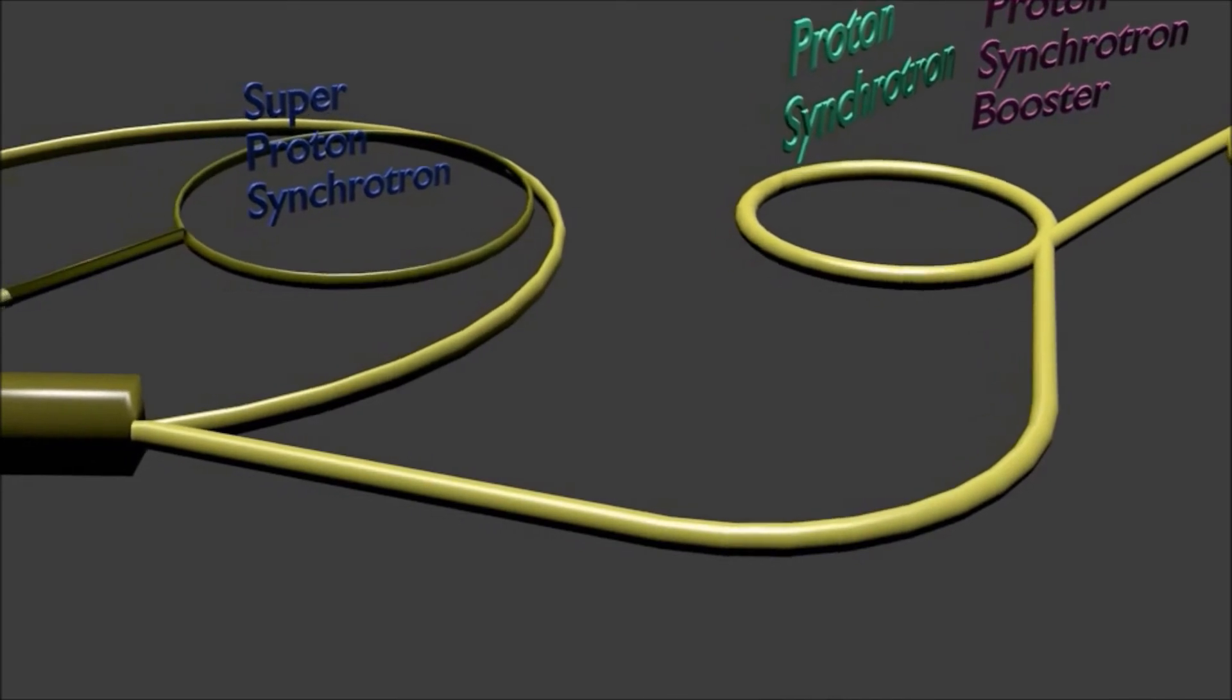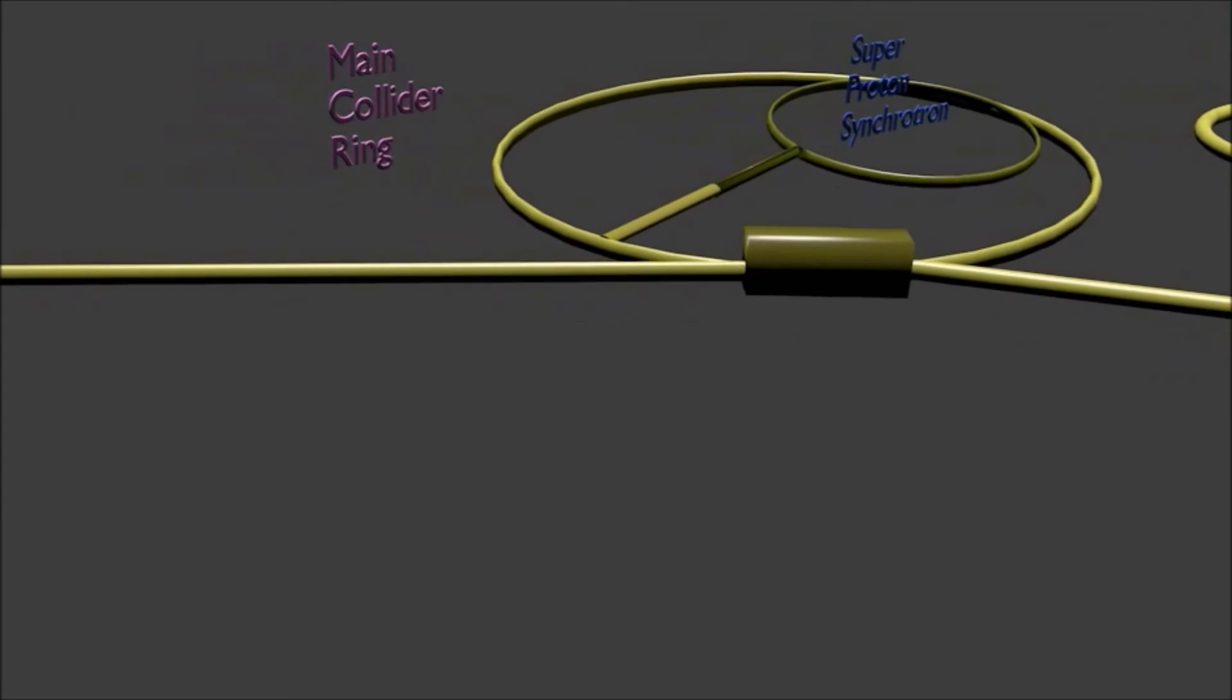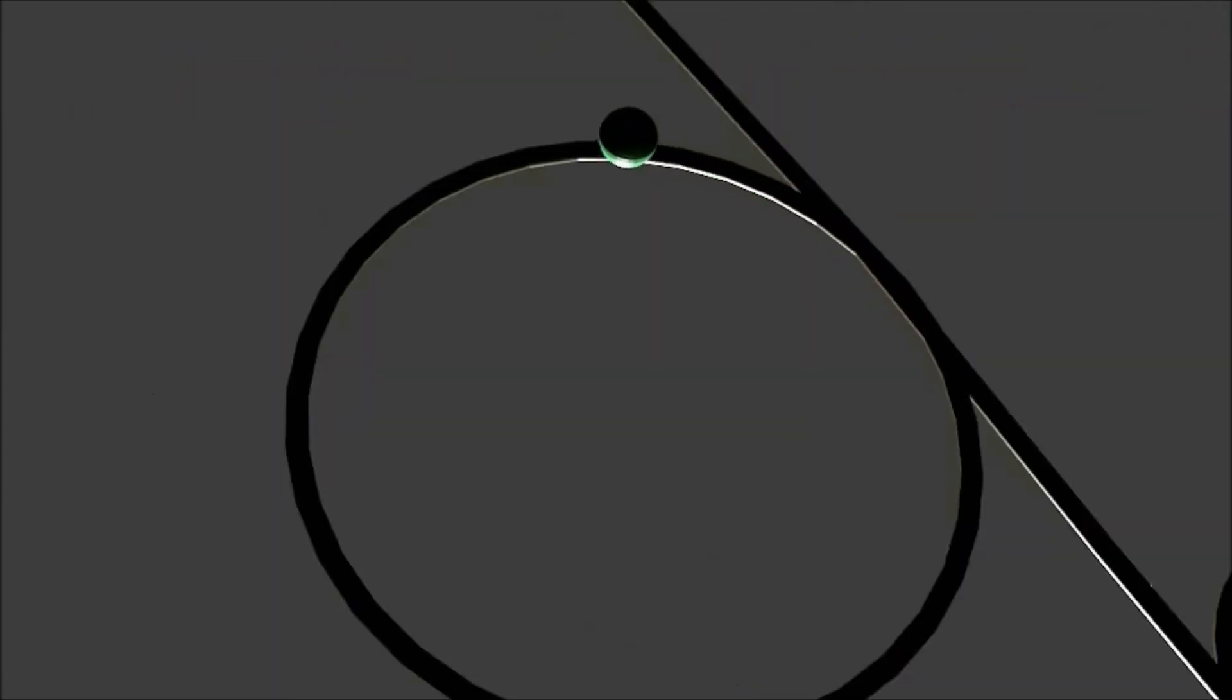Such collisions produce byproducts which help to find the structure of subatomic world and laws of nature. When protons enter the proton synchrotron booster, they are accelerated by electric field. The booster accelerates the proton beam up to 91.6% of speed of light. It also helps to increase their intensity and mass of protons, helping to increase kinetic energy of proton beam.